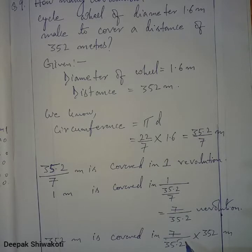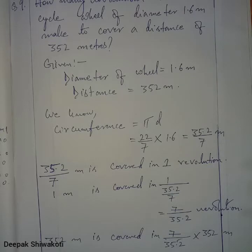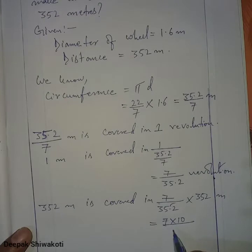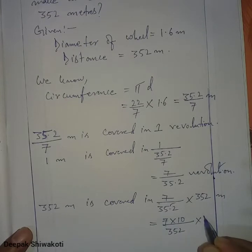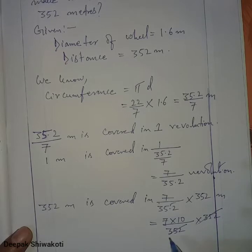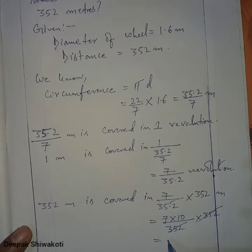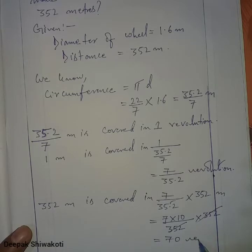Remove the decimal: 35.2 becomes 352 with a factor of 10. So we have 7 × 10 in the numerator and 352 in the denominator. The 352s cancel, and the number of revolutions is 70. So the answer is 70 revolutions.